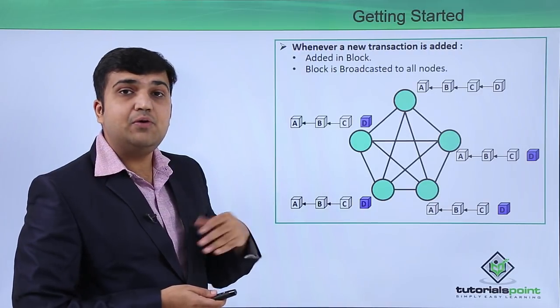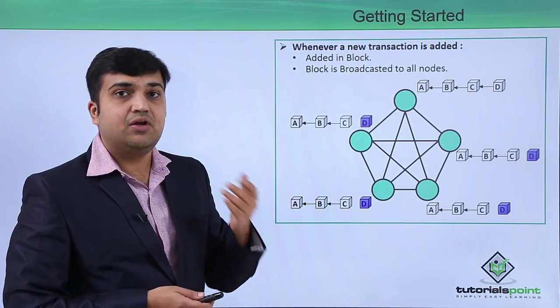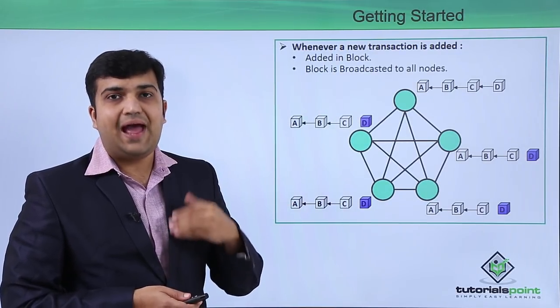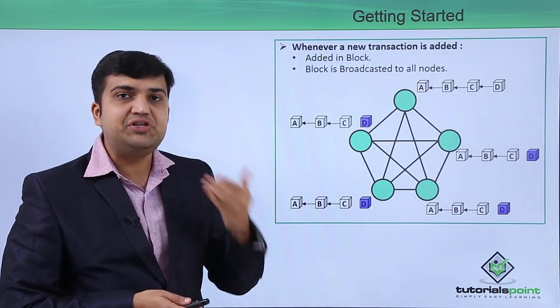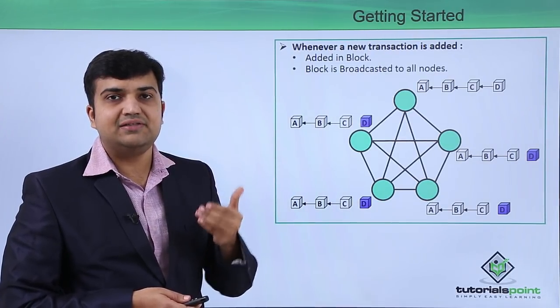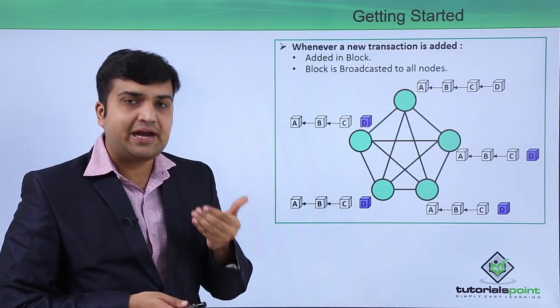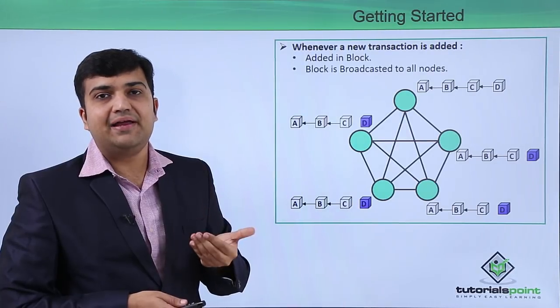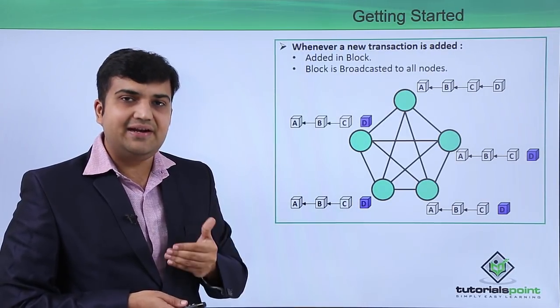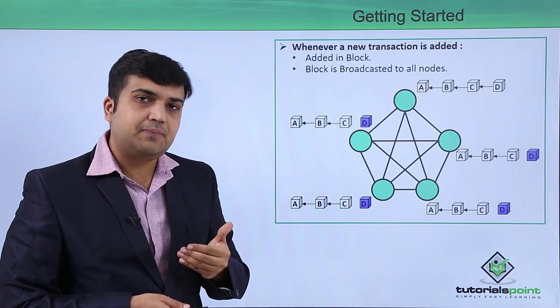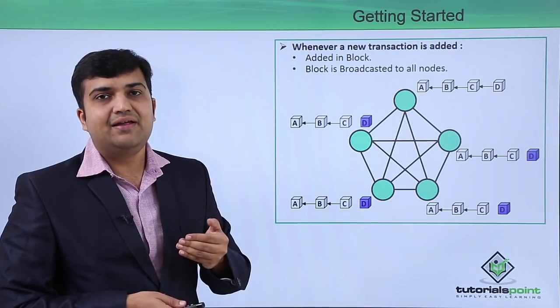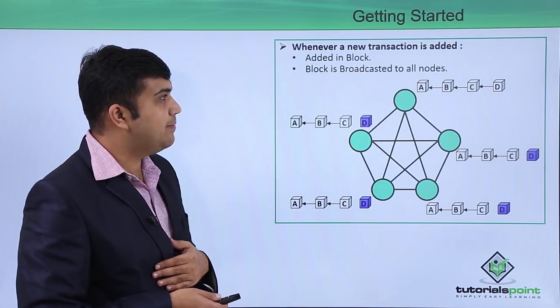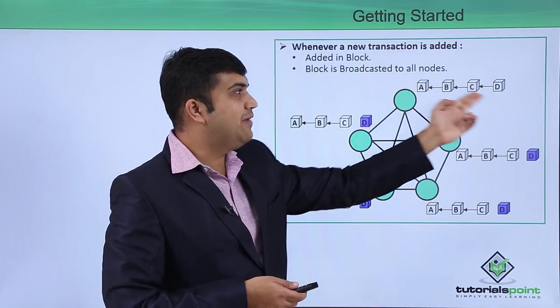What happens when a new transaction is added into the system? When a new block is added, the initiator of the transaction—that is, the node which is going to add this particular transaction—first validates the block. Once it is validated, it is added into the current copy of the blockchain and then broadcasted to all the nodes of the P2P network.